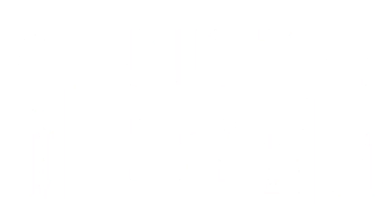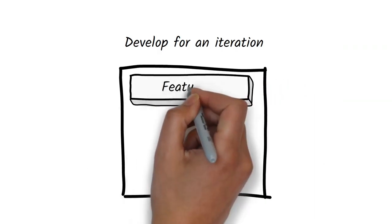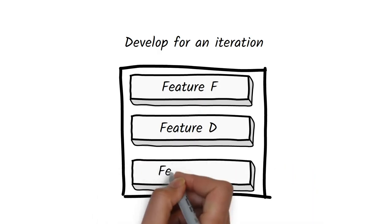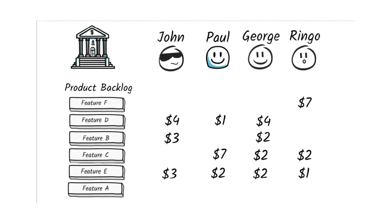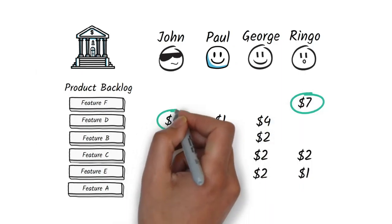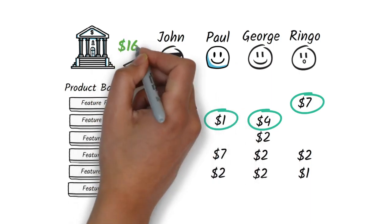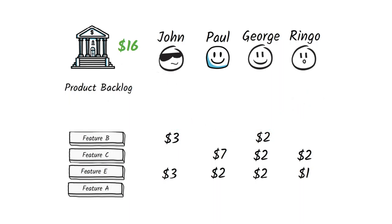What do we do next? We take that prioritized backlog and the development team starts working on it for an iteration. In our example, the development team managed to get through the first two items — F and D have been successfully implemented. The next step is to reallocate the dollars that were bid on F and D. Those items are archived off the backlog and the $16 that were spent on them goes back into the bank first — not back to the stakeholders who bid on them. That's really important.